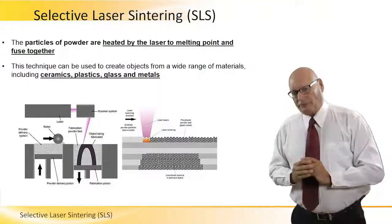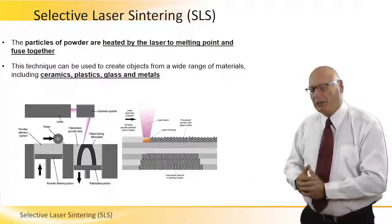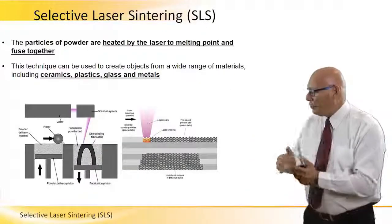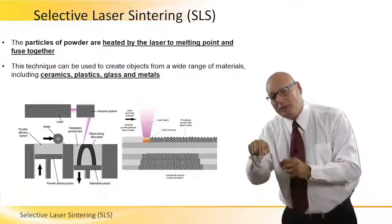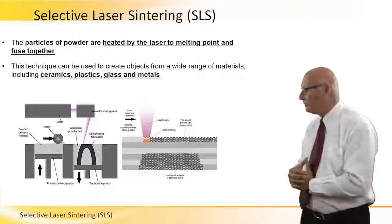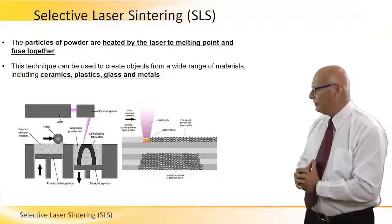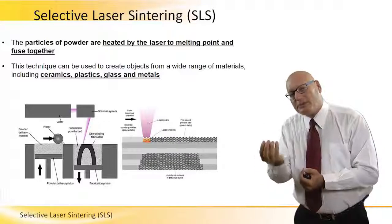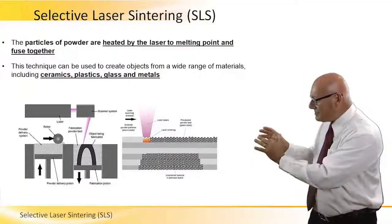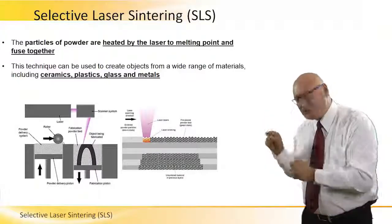Now let's talk about empty spaces. We see the piston on the left, the powder tank, the roller moving left to right, and the laser on top scanning. The scanner only hardens where the computer tells it to — that is the only point where the material is hardened. This particular shape — half of a ring, curved — has empty space inside. Looking at the picture on the right, the dark black areas represent empty space in the final product.